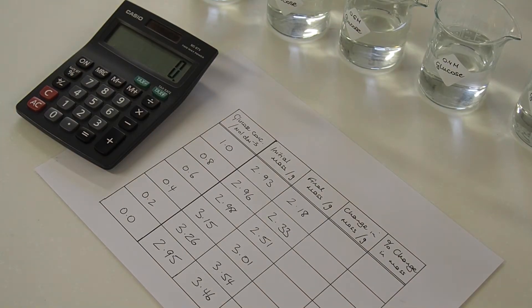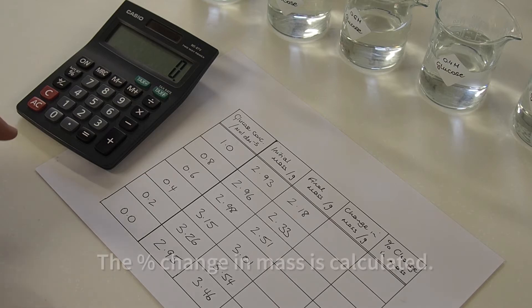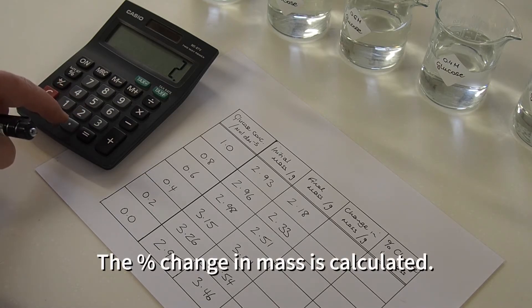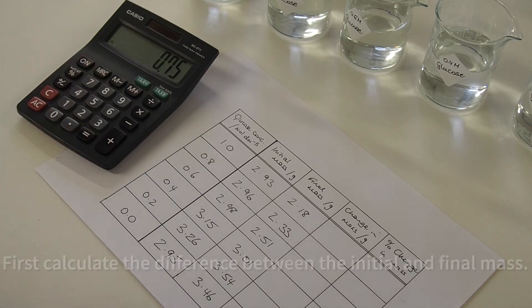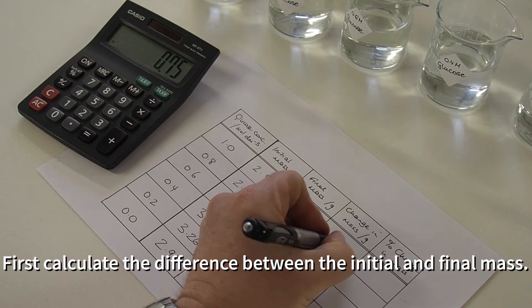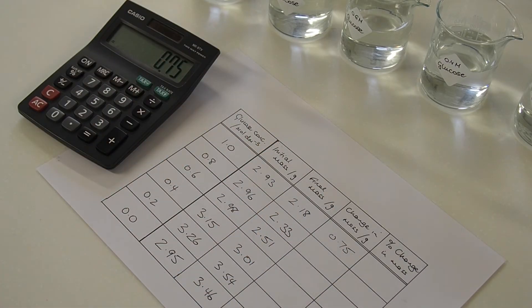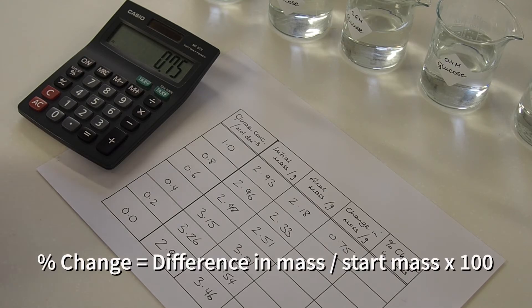Now, to enable fair comparisons between potato pieces that were different sizes to start with, we're going to calculate percentage change in mass. The first thing to do is calculate the difference between the initial and the final mass, and then the percentage change in mass is that number divided by the initial mass times 100.